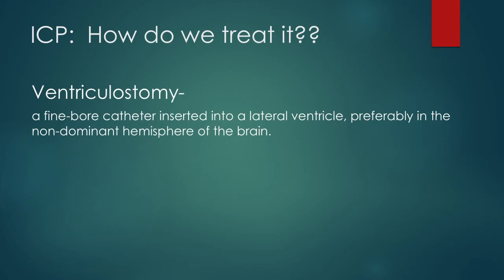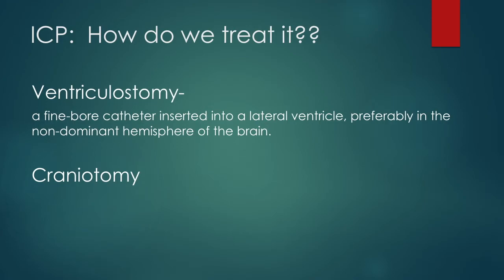These ventriculostomy catheters can be put in different places — these ones go inside the ventricles and are usually the gold standard. You have that fine bore catheter that goes into the ventricle, usually on the non-dominant hemisphere. The next surgical option is a craniotomy — this is when they actually go in and remove parts of the brain. They might take out part of that herniation, and very commonly after a craniotomy, that's when you start to see that diabetes insipidus. It helps remove tumors and clots, control bleeding, and relieve some of that pressure.